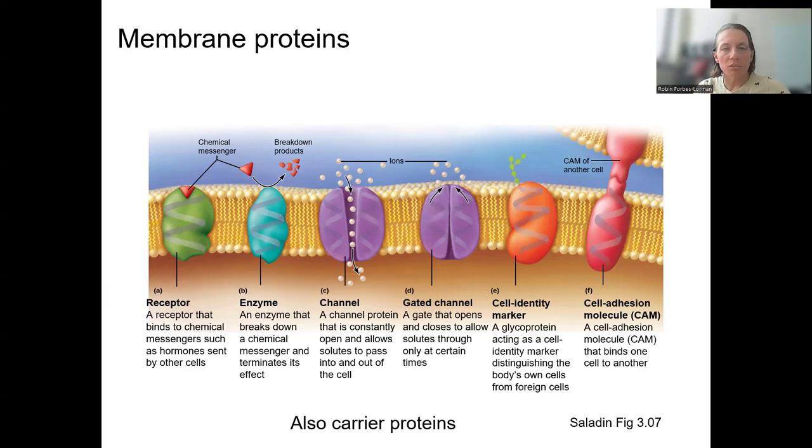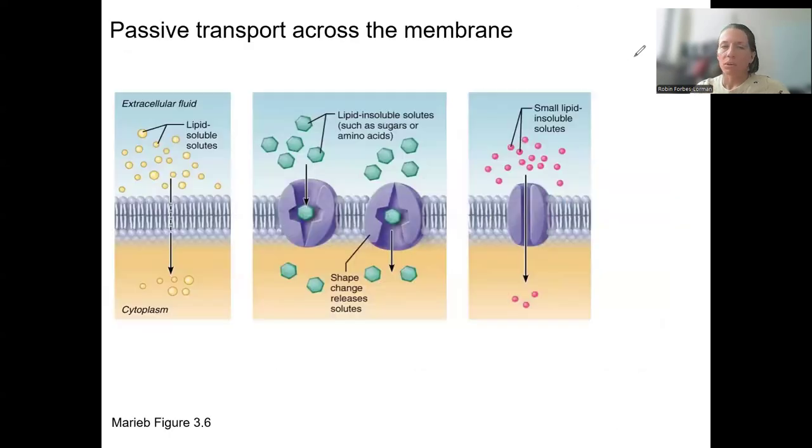We're talking about passive transport across the membrane. This is going to involve diffusion. Diffusion can either be simple, meaning it doesn't require a membrane protein. What molecules can go via this mechanism? Carbon dioxide, oxygen, steroid hormones are actually small enough.